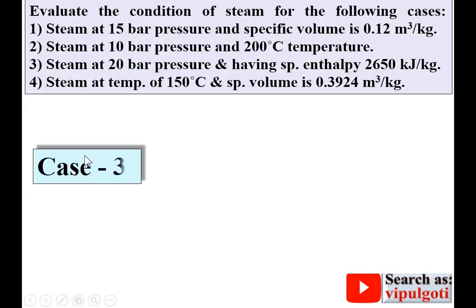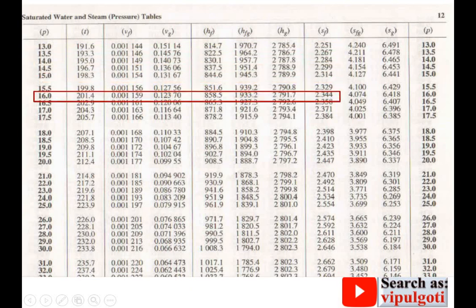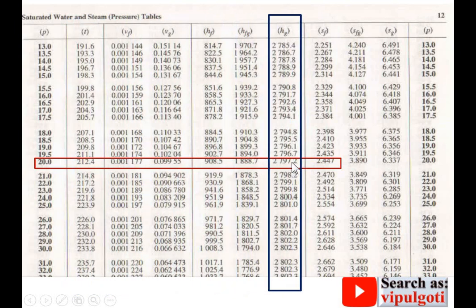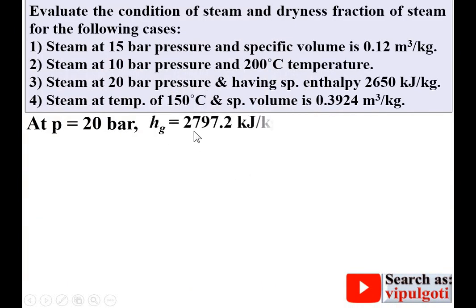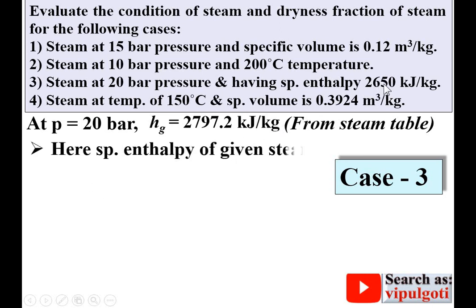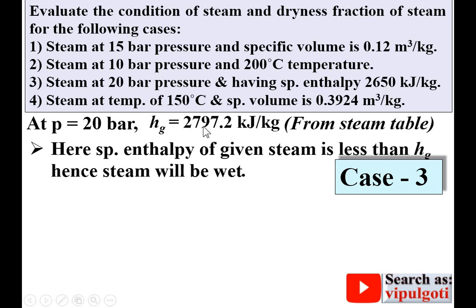Case three: steam at 20 bar pressure with specific enthalpy 2650 kJ/kg. From the steam table at 20 bar, Hg = 2797.2 kJ/kg. The given specific enthalpy of 2650 kJ/kg is less than 2797.2 kJ/kg, so the steam is wet steam.